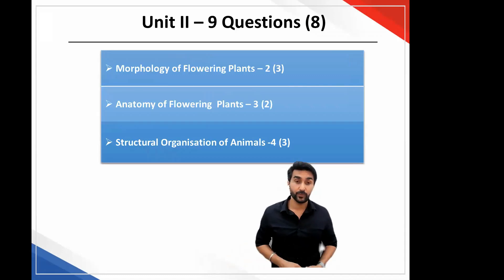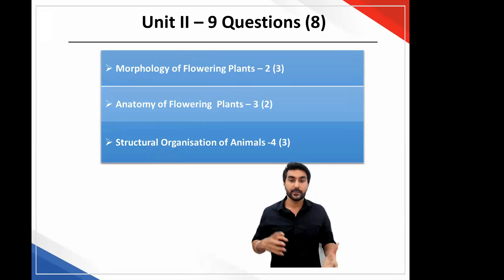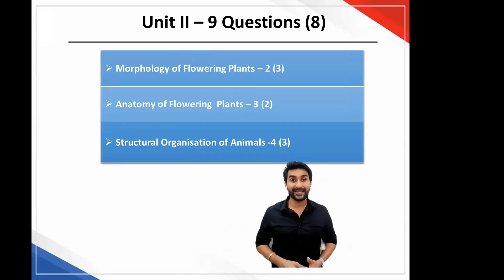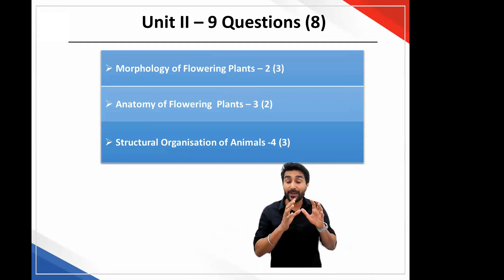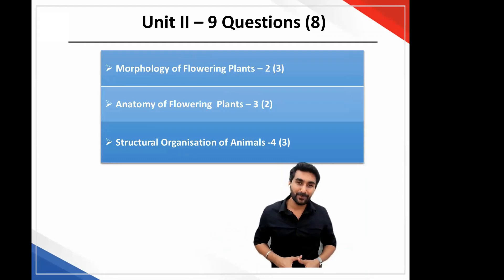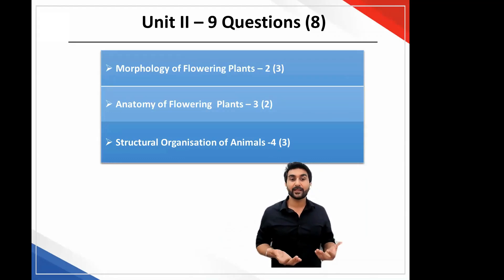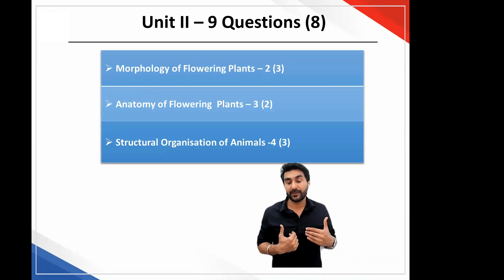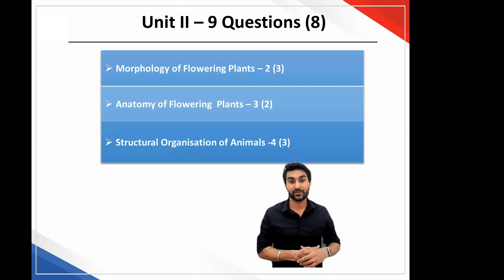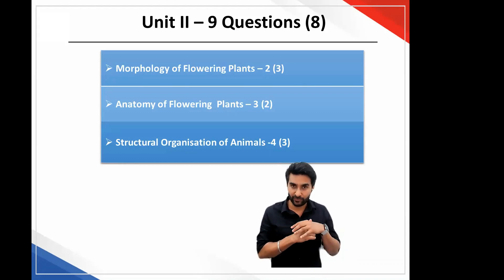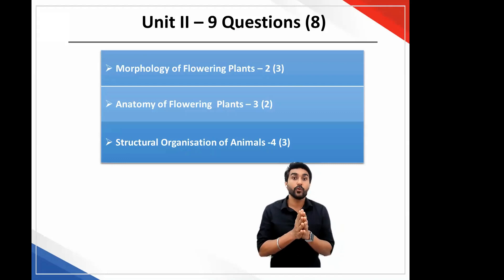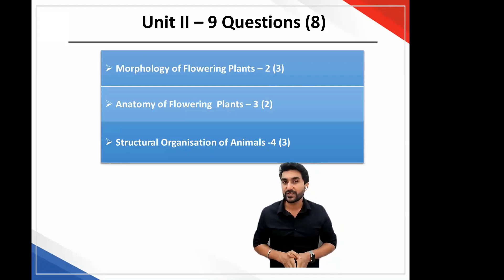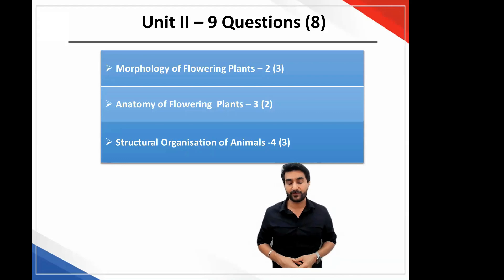In unit two, you had 9 questions coming this year as opposed to 8 in 2020, whereby you had fewer questions from morphology and a greater number from the chapter on structural organization of animals. So you had 2 questions only from the morphology chapter, 3 from anatomy, and 4 questions from the structural organization chapter.